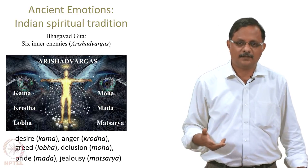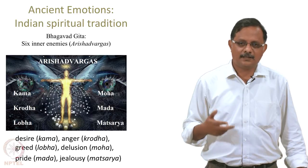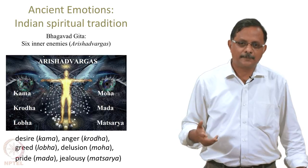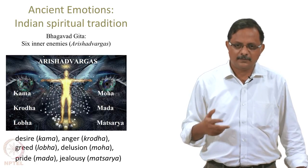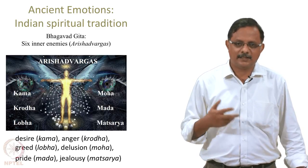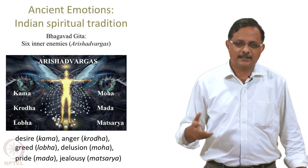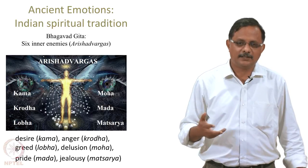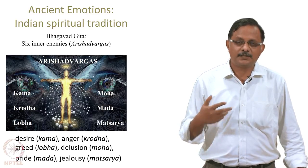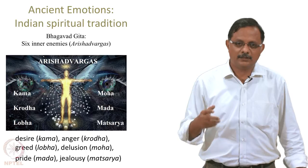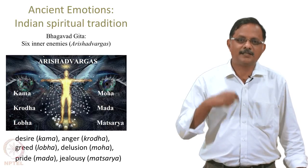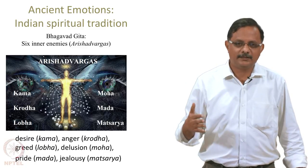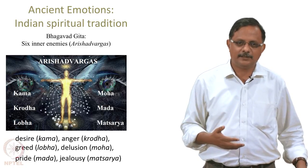These six inner enemies are: desire (kama), anger (krodha), greed (lobha), delusion (moha), pride (mada), and jealousy (matsarya). The Gita warns the seeker of perfection against these inner enemies and urges the individual to identify these emotions, try to rise above them, transcend them, and reach a state of tranquility. That is the typical undercurrent you see in the Gita.